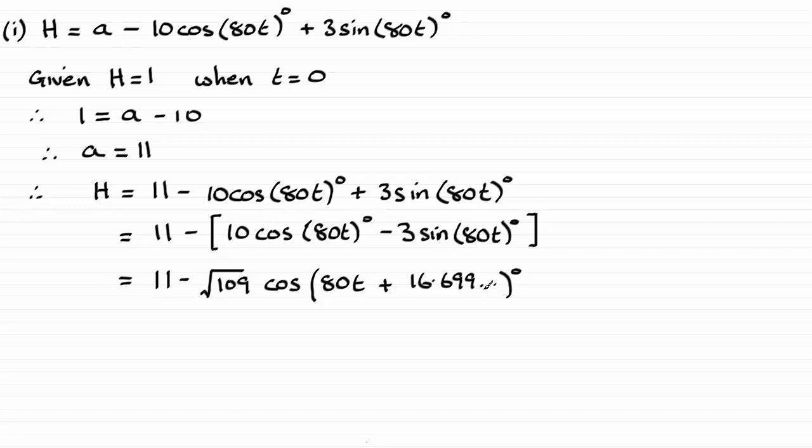And if we're to make this a maximum, then we just want this value to be negative 1. So we create 11 plus root 109. Be careful here, it's not to make this value 1, otherwise we're going to get a minimum value of 11 minus the root of 109.